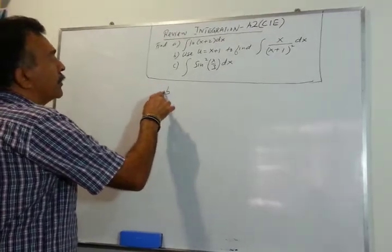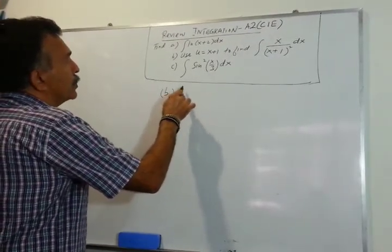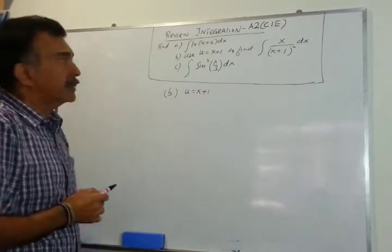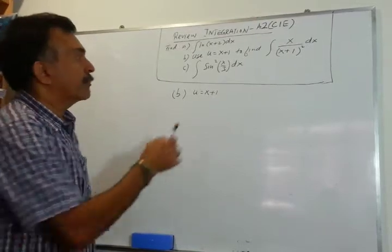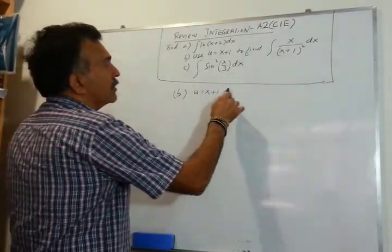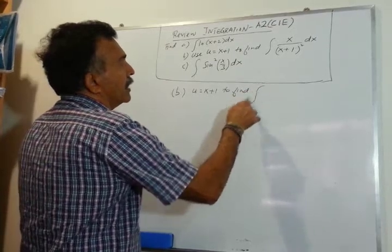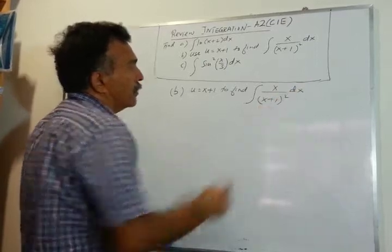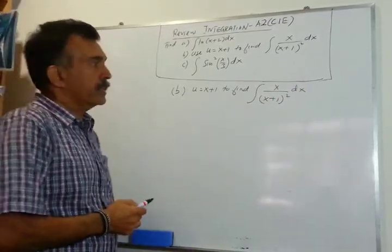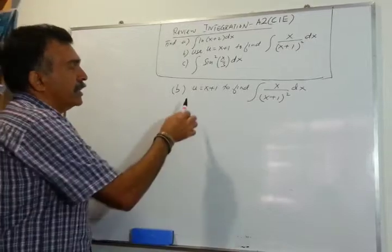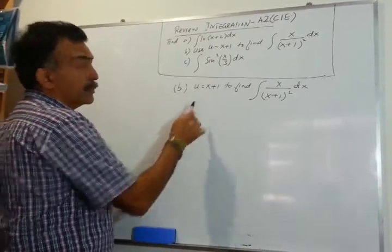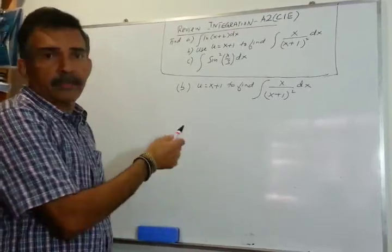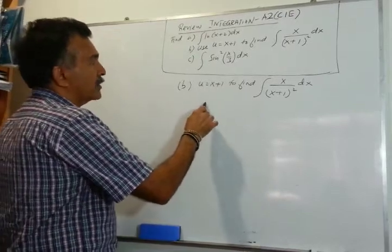In part B, we are going to use the substitution u equals x+1, as recommended. We have the integral of x over (x+1)² dx. In a problem that involves algebraic substitution, we always start by writing the substitution down.